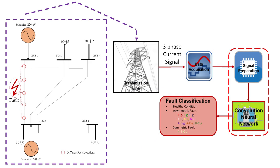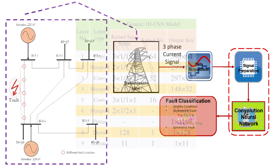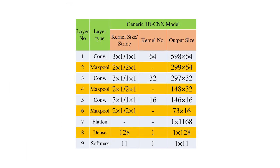In a nutshell, the whole process can be explained as follows: initially the current will be captured with a data acquisition system, then those signals will be pre-processed, then fed to the 1D CNN to train, and as a result, with the prepared model the faults will be classified. Accordingly, we have prepared a generic 1D CNN model to train with the prepared dataset.